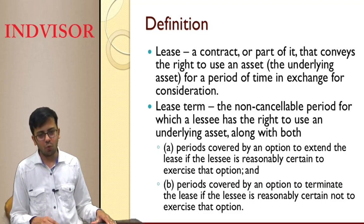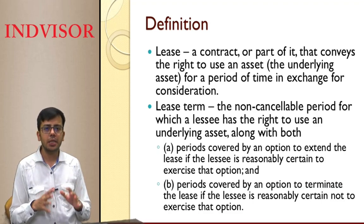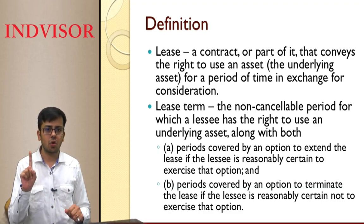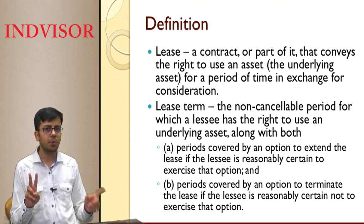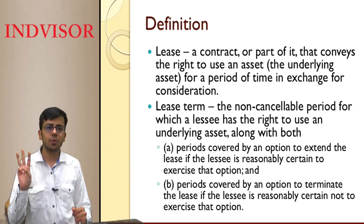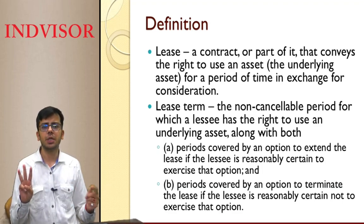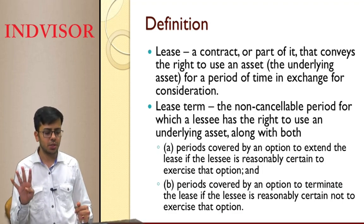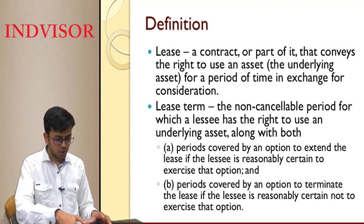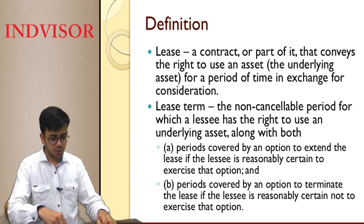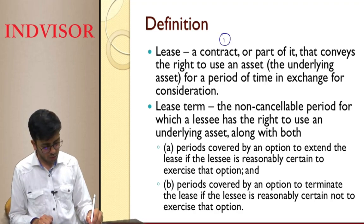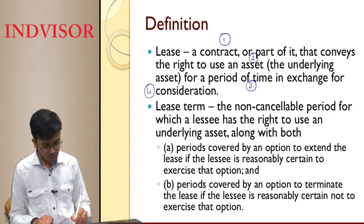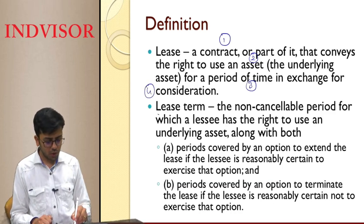Starting with what exactly is a lease. A lease must have four things: a contract, an asset, a specified time period (it cannot be indefinite), and a consideration (it cannot be free). So by definition, a lease always has these four elements: contract, asset, time period specified, and consideration.